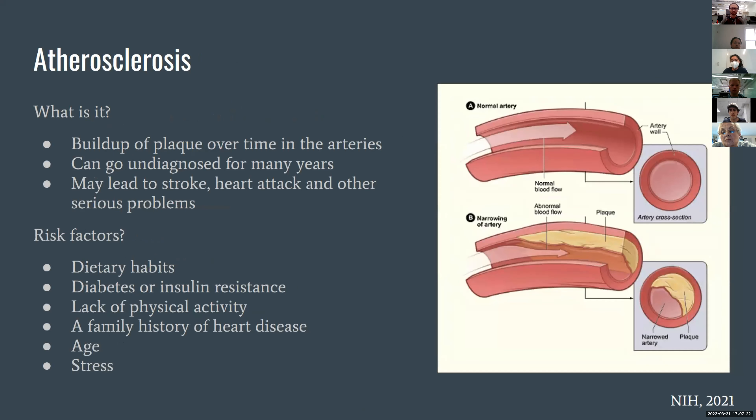The first disease we want to talk about is atherosclerosis, which is characterized by the buildup of plaque in the arteries — more commonly the arteries leading away from the heart carrying oxygenated blood to various parts of the body, including the brain, organs, and legs. This condition can go undiagnosed for many years as there is no easy way to check for it at every checkup. It can lead to stroke, heart attack, and other serious problems over time, so great care must be taken to prevent it.